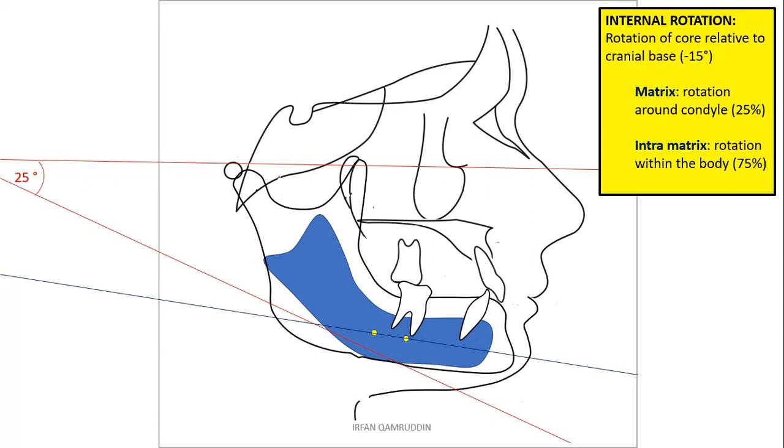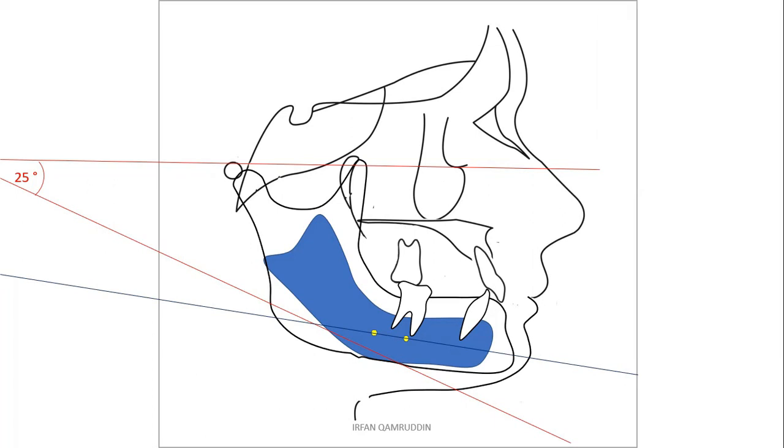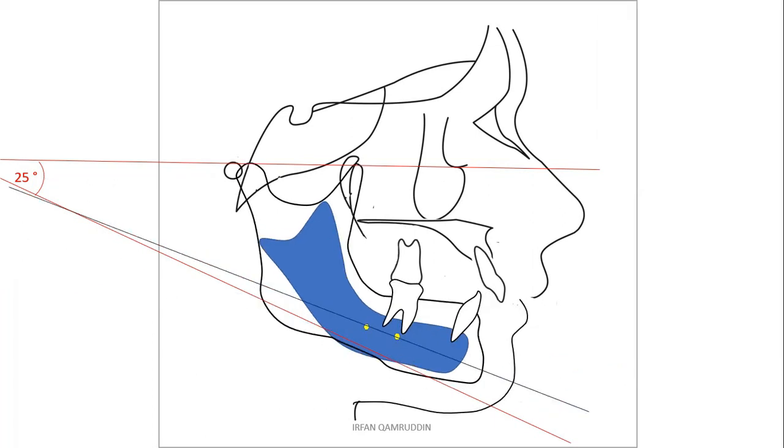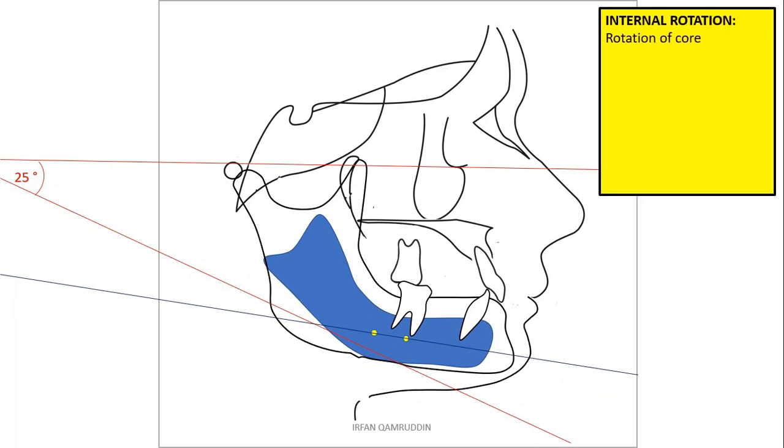Other component was intramatrix rotation, which is the rotation of the core of the jaw itself. See again, this blue core of the jaw is rotating within the body irrespective of the condyle. This is intramatrix rotation. In people with normal vertical growth pattern or normal divergence, the intramatrix rotation actually dominates and contributes around 75 percent of the internal rotation, while matrix rotation contributes just 25 percent normally.